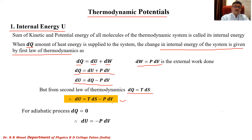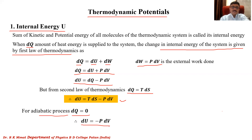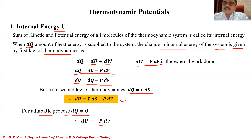If we assume an adiabatic process — a thermodynamic process during which the total heat energy of the system remains constant, with no heat given to or taken from the system — then dQ = 0. Substituting, we get dU = −P dV. This indicates that the change in internal energy equals the work done on the thermodynamic system. So during an adiabatic process, internal energy equals the work done on the system.